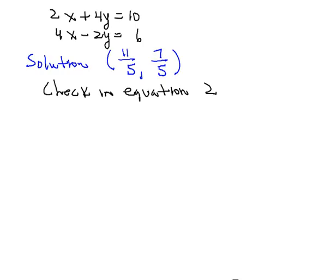Now let's next check the solution we just came up with, the 11 fifths, 7 fifths, in one of the original equations. I'm going to choose equation 2 here. So what we'll have then will be 4 times the quantity 11 fifths minus 2 then times the quantity 7 fifths.